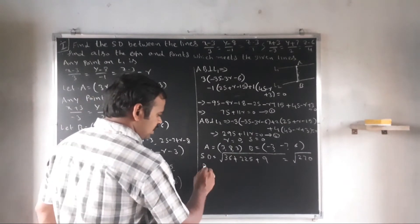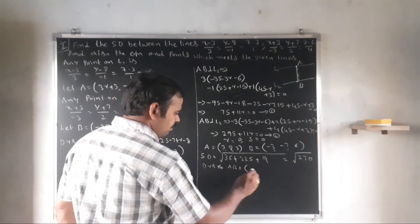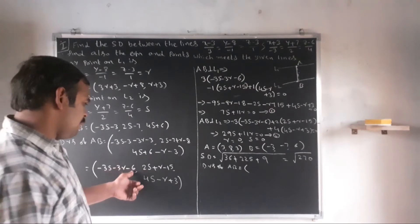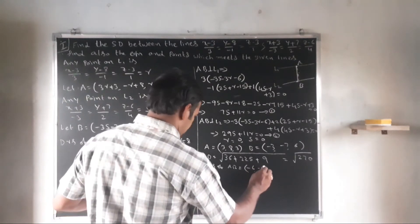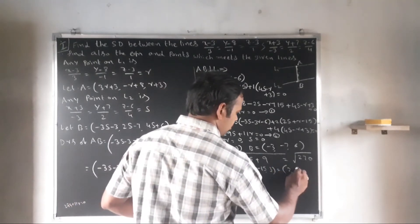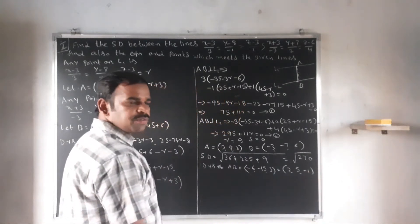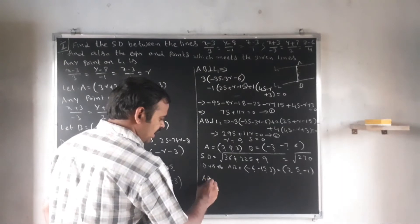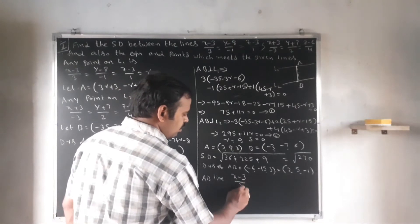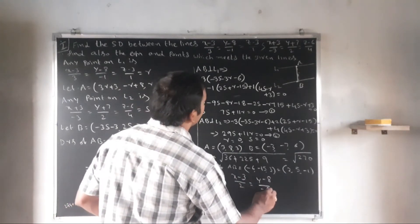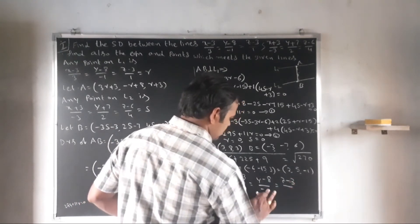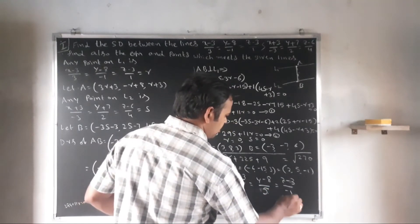For the line equation of SD: direction ratios of AB with R = S = 0 are (-6, -15, 3), simplified to (2, 5, -1). The SD line equation passes through A(3, 8, 3): (x - 3)/2 = (y - 8)/5 = (z - 3)/(-1).